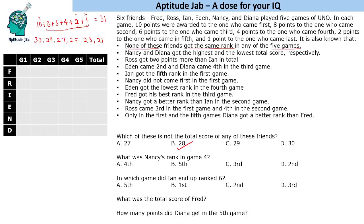Now let's determine which total corresponds to which missing point value. If a person is missing the 10-point value, they score 21; if missing 6, they score 25. Nancy and Dinah got the highest and lowest total scores respectively, so Nancy scored 30 and Dinah scored 21. Ross got two points more than Ian in total, so if Ian has X points, Ross has X plus 2.